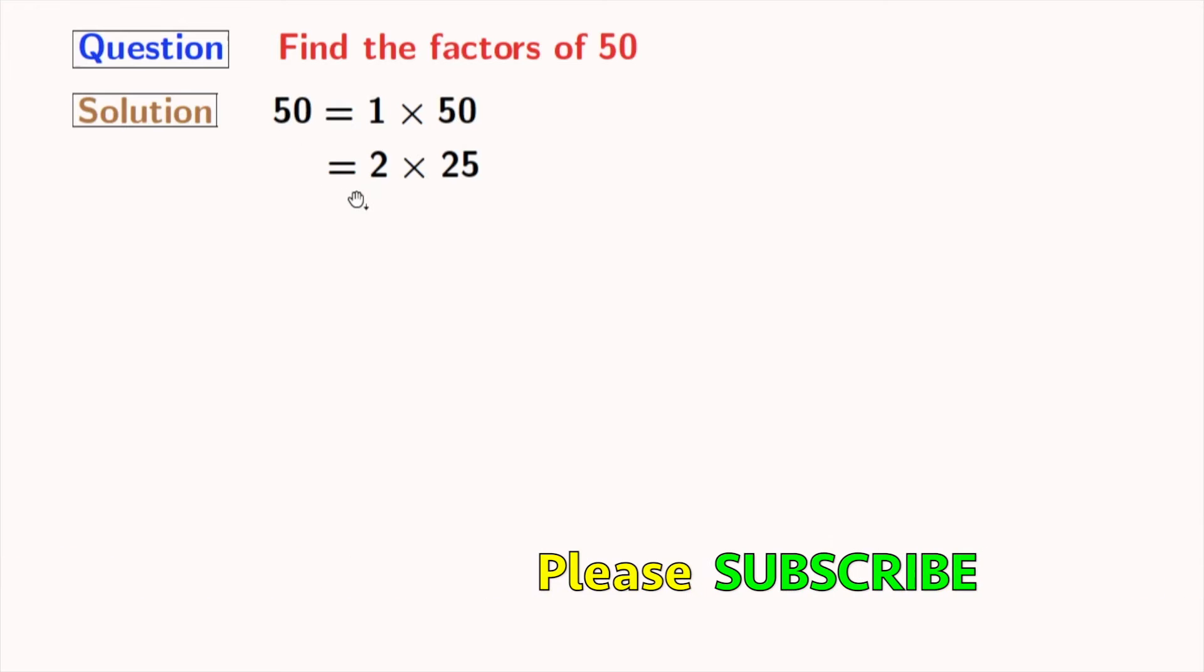So, we will try for 5. And see that 5 times 10 is equal to 50. Between 5 and 10 comes 6, 7, 8 and 9. But these numbers do not divide 50.